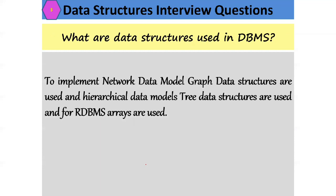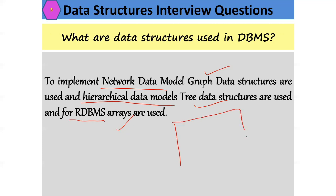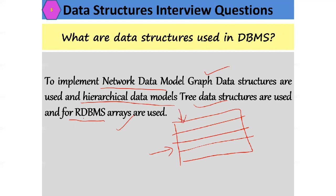What data structures are used in database management systems? They are used to model the data. To implement the network data model, graph data structures are used. To implement hierarchical data models, tree data structures are used. To implement relational database management systems, arrays are used — a relational database management system is essentially a table with rows and columns, and it is implemented using an array.